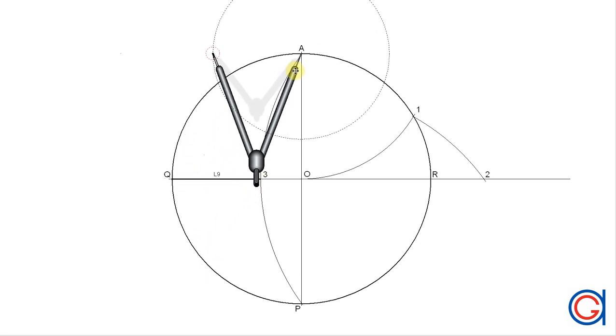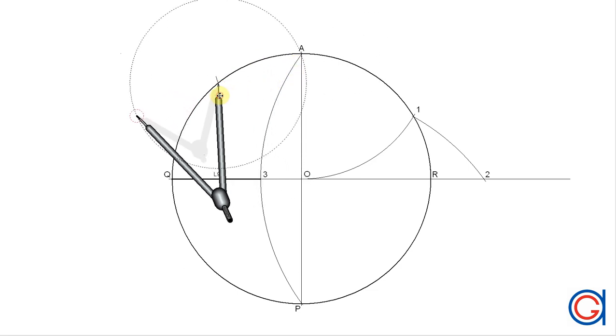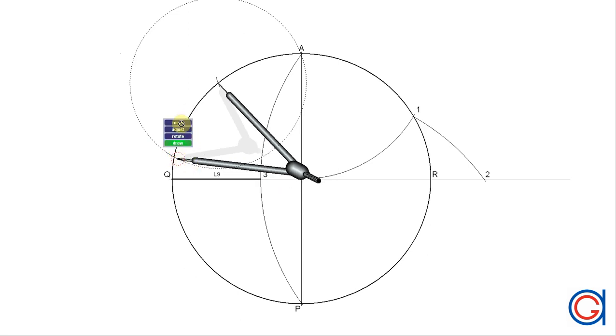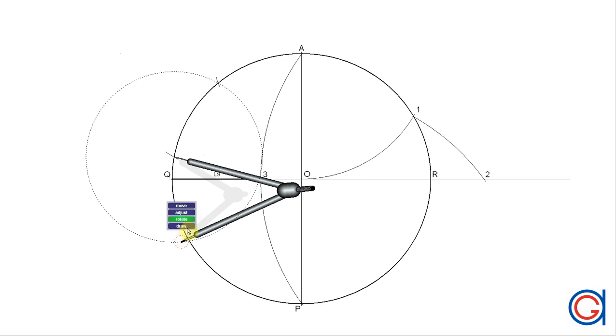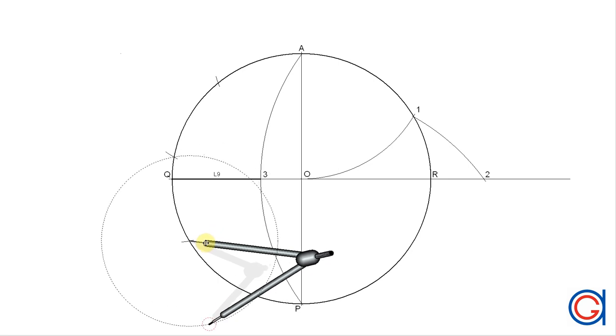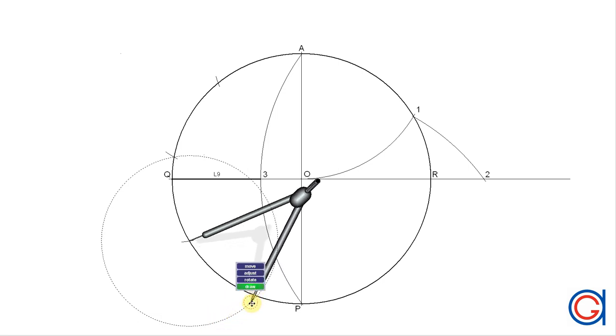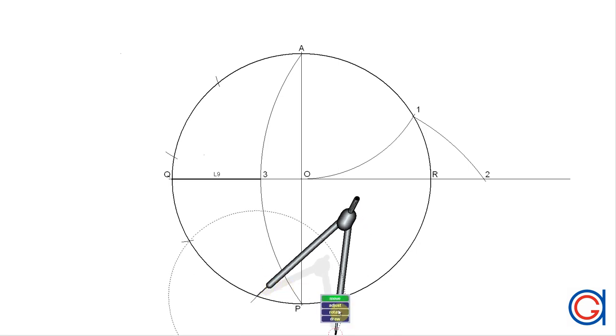And now setting our compass on point A, we scribe our first vertex. And again with the same radius, setting our compass on the previously scribed vertex, we scribe our second. Here we have our third arc, and setting our compass on this, this is our fourth. Again setting our compass on our previously scribed arc, we scribe our fifth.